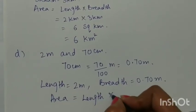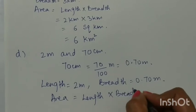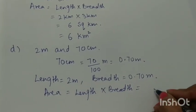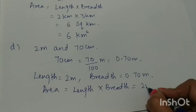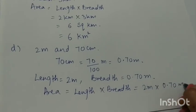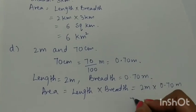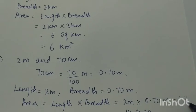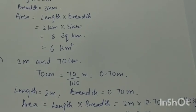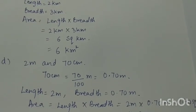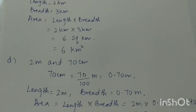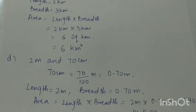Length is 2 meters and breadth is 0.70 meters. Area of rectangle is length multiplied by breadth. Length is 2 meters and breadth is 0.70 meters, so the area will be 1.40 square meters. This is the answer for Part D of question number 1.